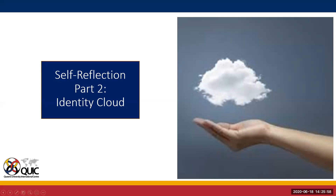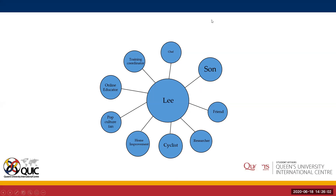I've added my own identity cloud — an identity wheel including all the different roles I feel I'm filling in my life right now: my professional identity as a training coordinator, my family identity as a son, my social identity as a friend, and personal identities around my hobbies like home improvement and cycling. The important thing is to consider myself as a multifaceted person and not just focus on one aspect of my life.